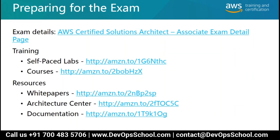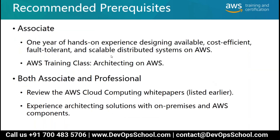For preparing for the exam, there is an exam details page on AWS content. In the student guide you will have those links available, and then self-paced labs similar to what we have done — you have self-paced labs in quick labs which you may want to take as well. Recommended prerequisites for associate level include one year of hands-on experience in designing available, cost-efficient, fault-tolerant, and scalable distributed systems on AWS, plus the AWS training class on architecting on AWS.